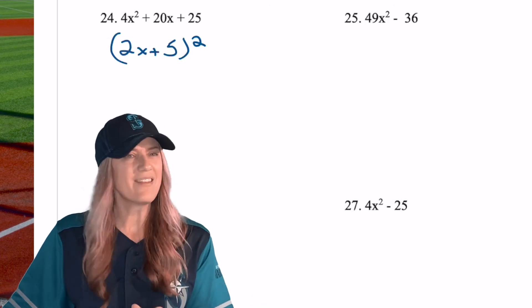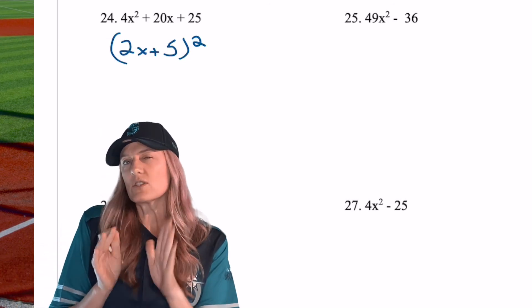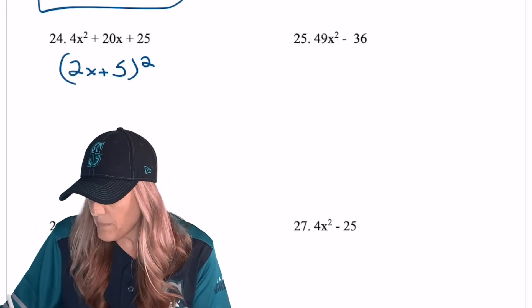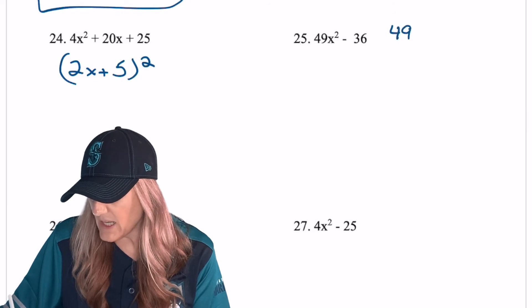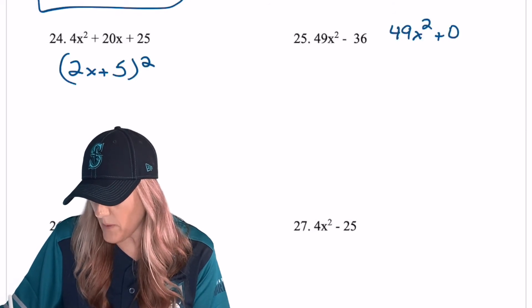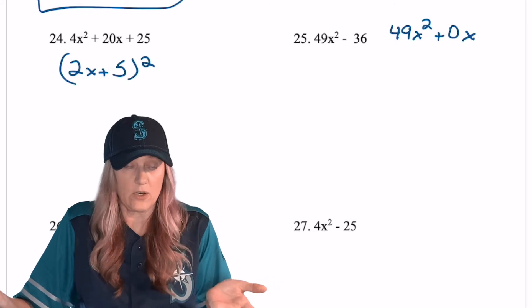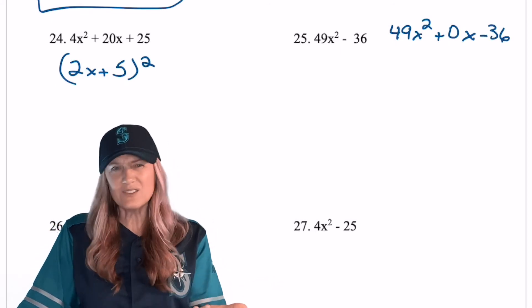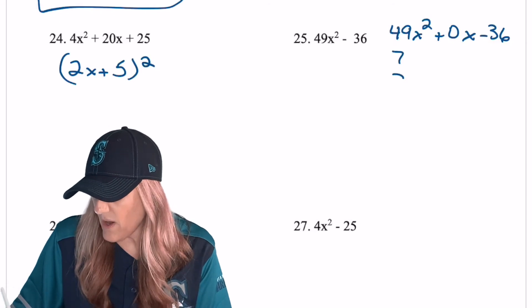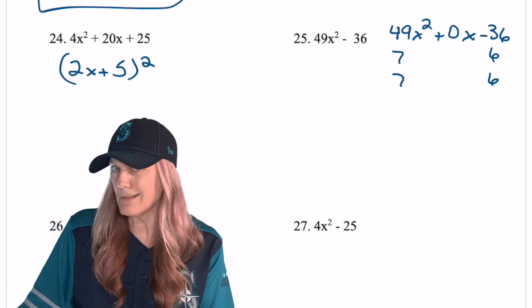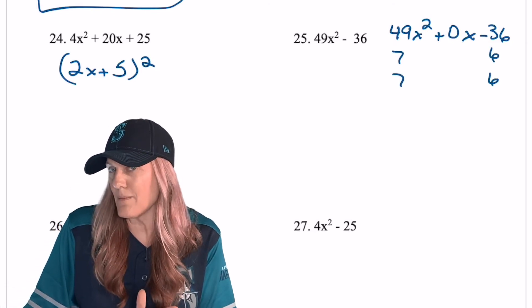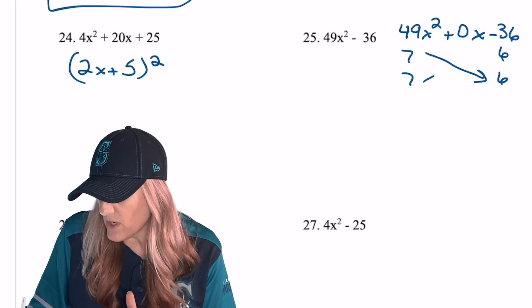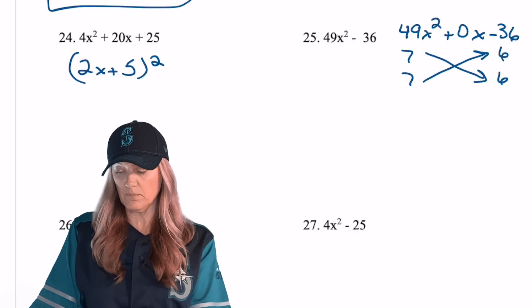This isn't brand new, so there's two ways we can do this, and once you get used to it, you probably won't need to do this, but I can go ahead and rewrite it as 49x squared plus 0x, right? There is no b term, bx, right? And then minus 36. So now we're still doing our crisscross method, and I know I'm pretty close to, right? I need to get 0 in the middle, which means the two products have to match. So this would be 42, and that would be 42.